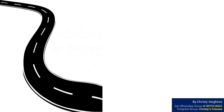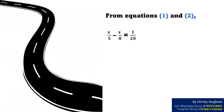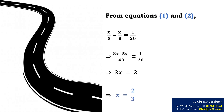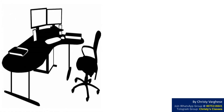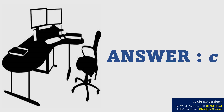From equations 1 and 2: X/5 minus X/8 equals 1/20. Taking LCM on the left-hand side, we get (8X minus 5X) divided by 40 equals 1/20. This implies that 3X equals 2, from which we get X equals 2/3. Hence, the right answer to the question is option C.